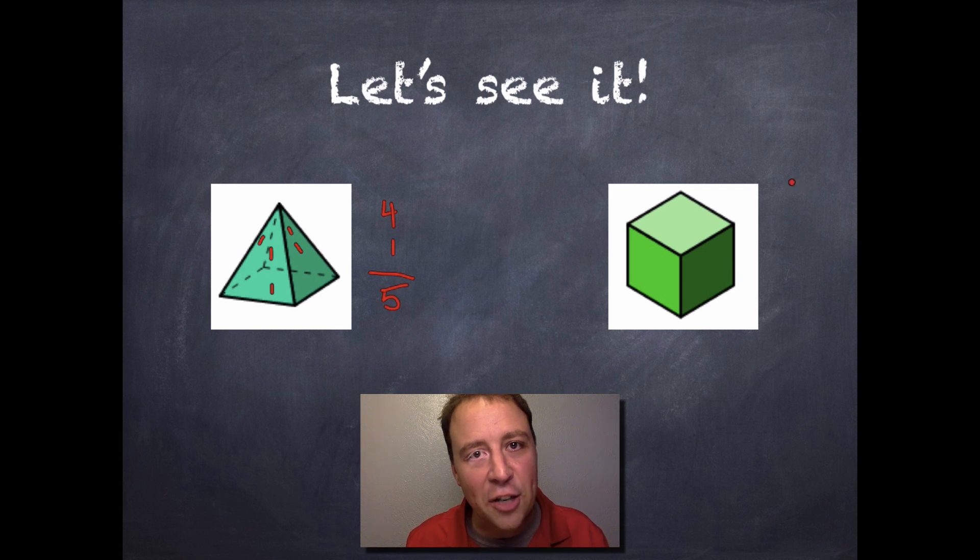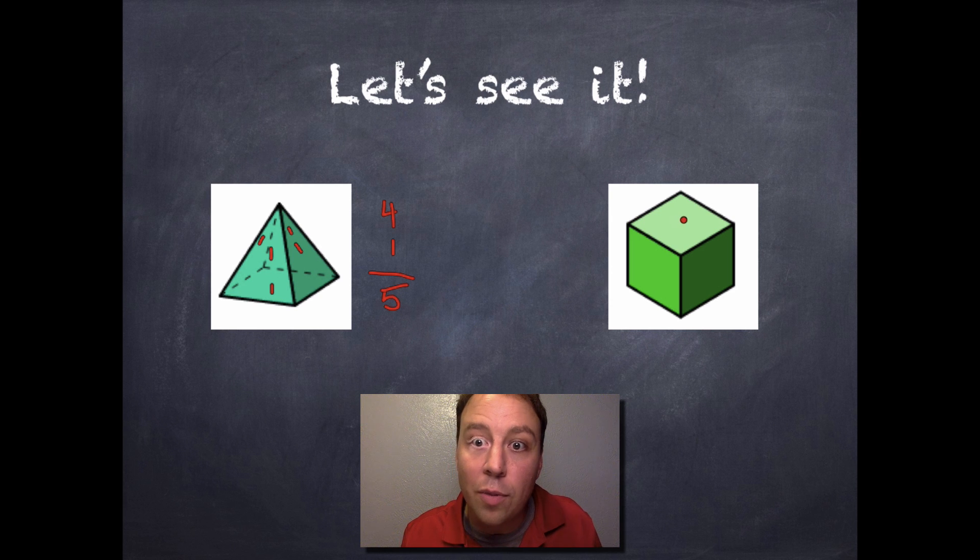All right. Now, this one's going to be a little easier for you to understand. A cube. Now imagine you roll a dice. How many numbers are there on a single die? Well, there's six, right? One, two, three, four, five, and six. So how many faces are there on a cube? Six, right? We put a number on each face.